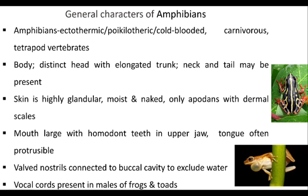In amphibians, the buccal cavity is large and has homodont teeth in the upper jaw, and they have a muscular protrusible tongue. They have valved nostrils connected to the buccal cavity to exclude water. Vocal cords are present only in males of frogs and toads, and they use vocal cords to give signals during mating.